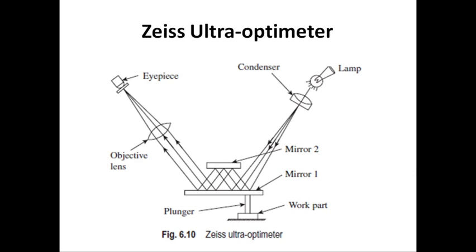So students, we have discussed the classification of mechanical comparators and covered three types: dial indicator, Johnson Mikrokator, and Sigma comparator. The next one is the mechanical optical comparator. Over here we have the mechanical and optical principles combined together to give much better results. This one is called the Zeiss Ultra Optimeter. It is a mechanical optical comparator that can provide higher magnification than regular mechanical or optical comparators. This magnification is made possible by use of two mirrors which create double reflection of the light as seen in the figure.